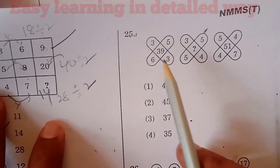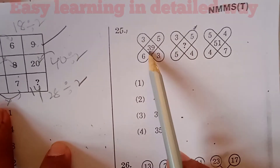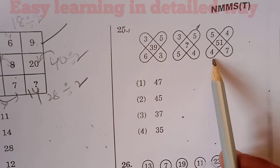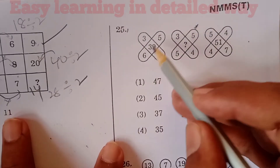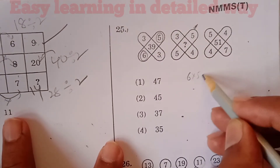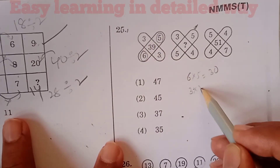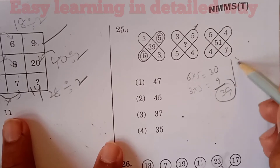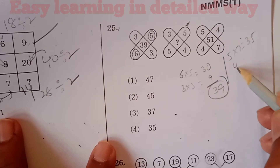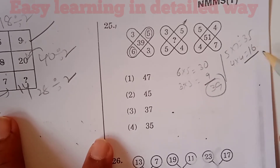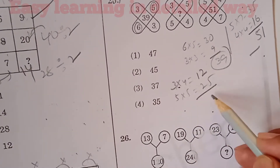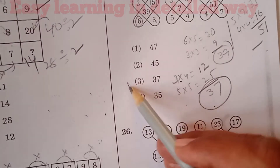Question number 25: We have 3, 5, 6, 3, 39 and 5, 4, 51, 4, 7. We need to establish the relation. The pattern is cross multiplication: 5 into 7 is 35, and 4 into 4 is 16, so 35 plus 16 gives 51. In the same way, 3 into 4 is 12 and 5 into 5 is 25, so 12 plus 25 is 37. Option 3 is the right answer for question 25.